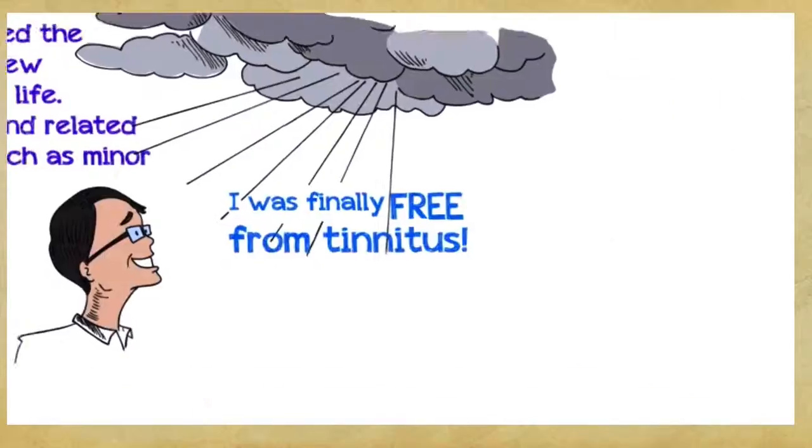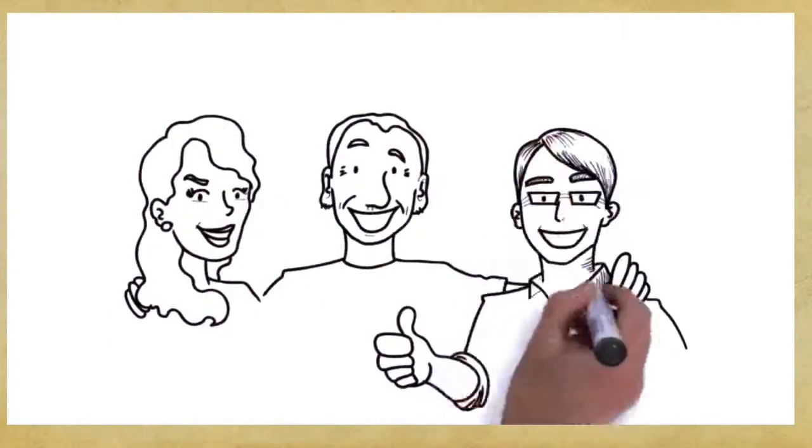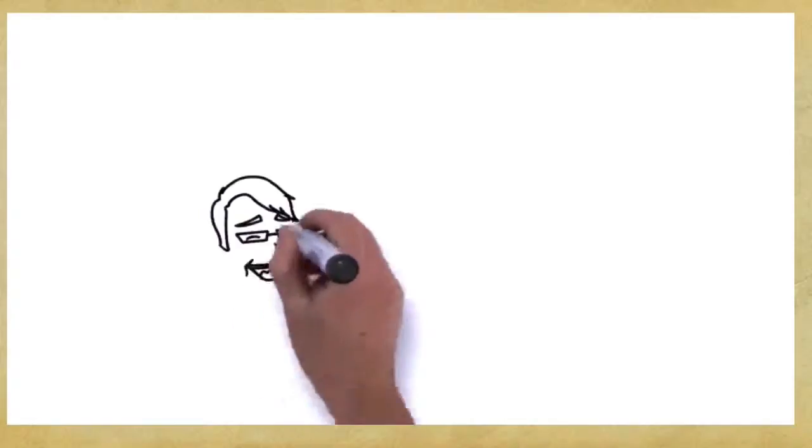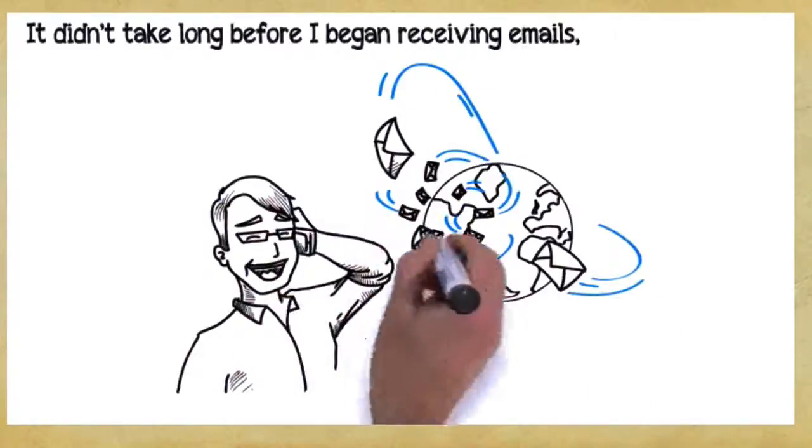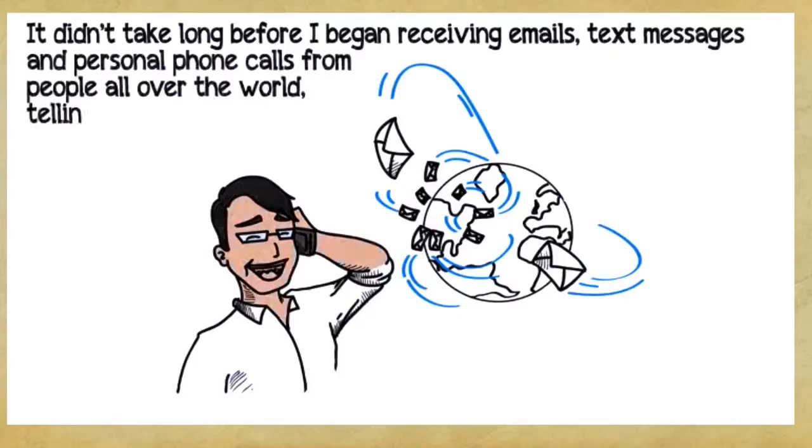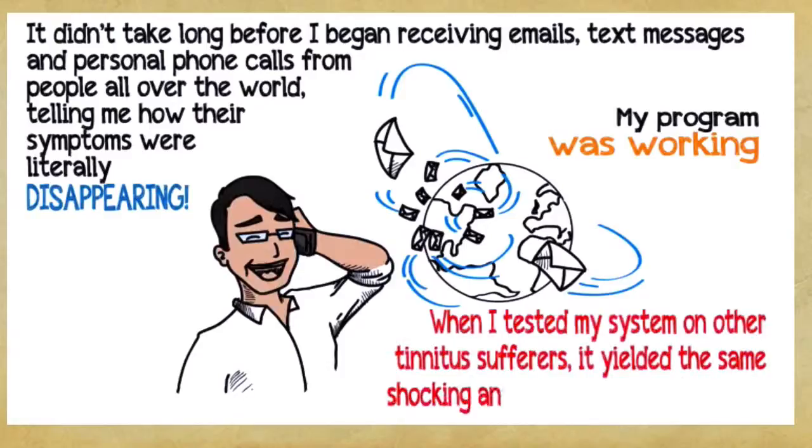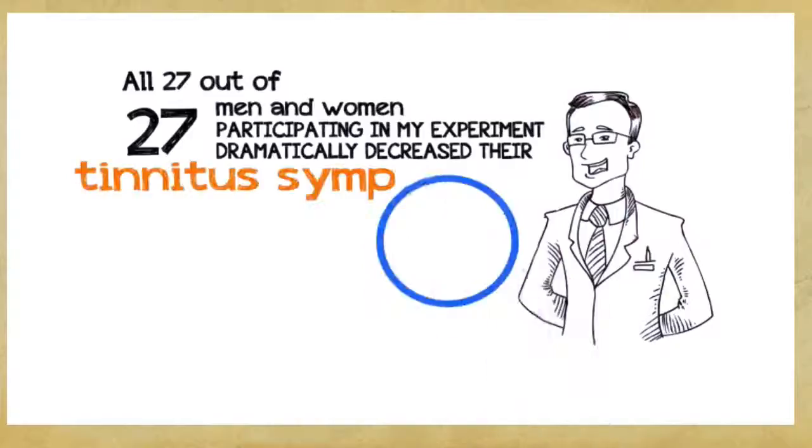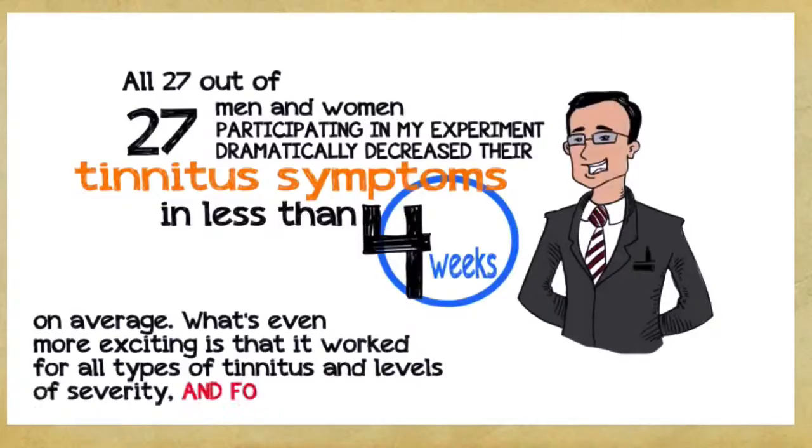Since I'd been on multiple blogs and various tinnitus groups for years, it wasn't difficult to find other people willing to give my treatment a try. What I was offering was a completely safe alternative to all of the dangerous treatments offered by the medical community. I sent off my five-step protocol to several dozen tinnitus sufferers and waited for them to tell me how it worked. It didn't take long before I began receiving emails, text messages, and personal phone calls from people all over the world telling me how their symptoms were literally disappearing. My program was working and more and more people were asking me for help. When I tested my system on other tinnitus sufferers, it yielded the same shocking and groundbreaking results. All 27 out of 27 men and women participating in my experiment dramatically decreased their tinnitus symptoms in less than four weeks on average. What's even more exciting is that it worked for all types of tinnitus and levels of severity and for men and women of any age.